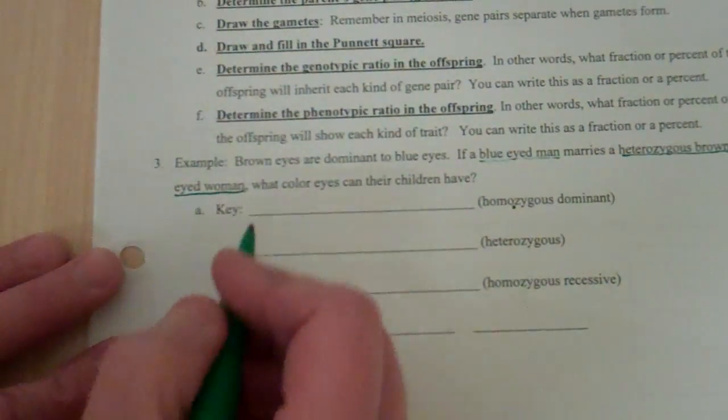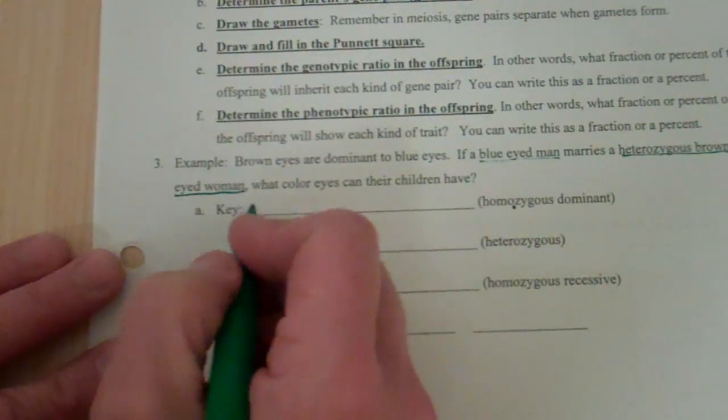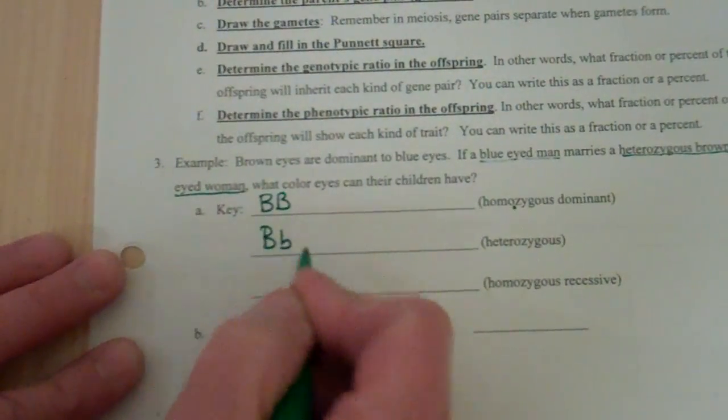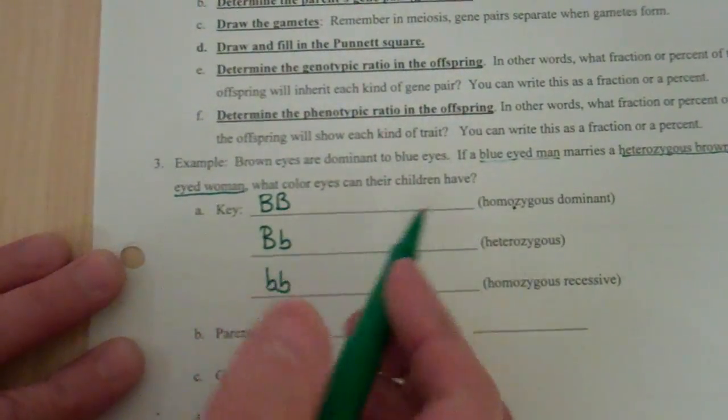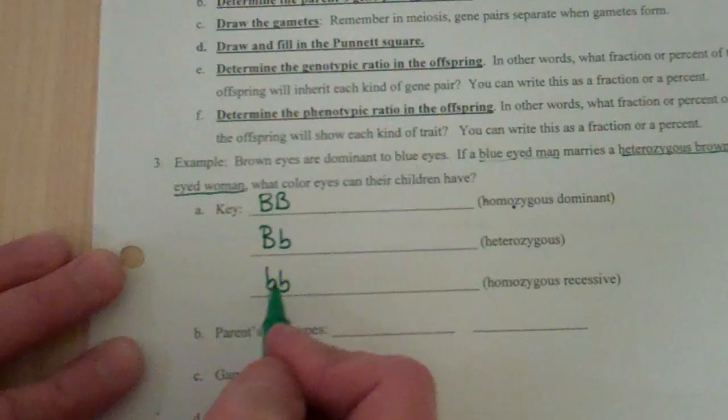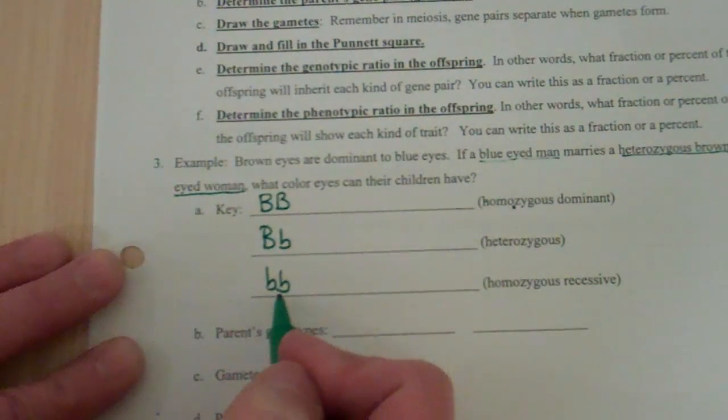So I'm going to write the genotypes first, and let's use the letter B. So big B, big B, then big B, little b, and little b, little b. I did it in this order. This is homozygous dominant. This is heterozygous. This is homozygous recessive.